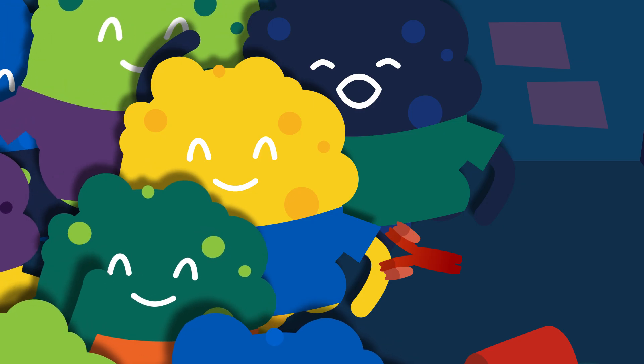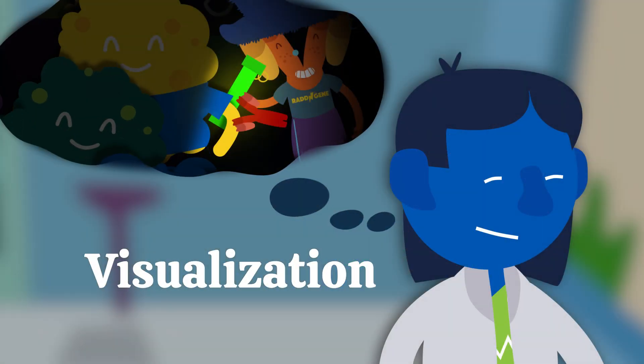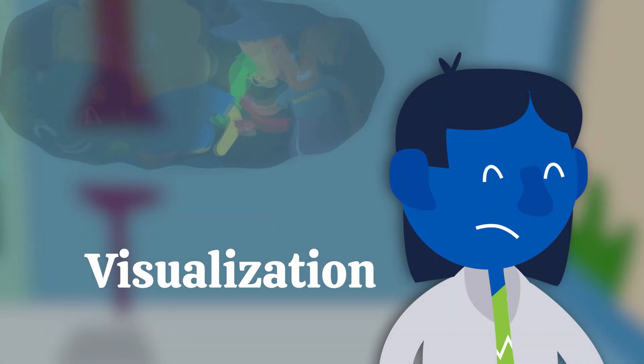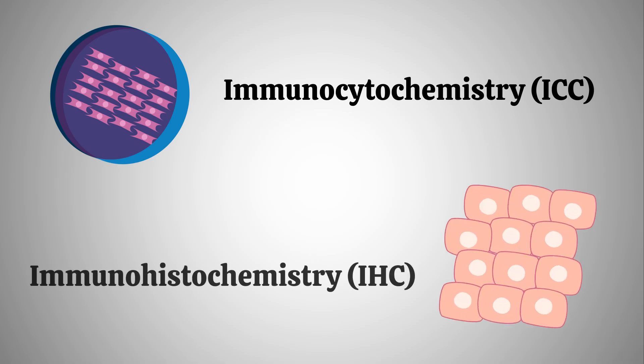The third class of antibody application is visualization. Visualization includes immunocytochemistry, or ICC, which uses antibodies to label targets in a cell culture, and immunohistochemistry, or IHC, which uses antibodies to label targets in a tissue sample.